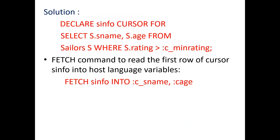The solution to example two is to make use of a cursor in order to fetch s_name and s_age from seller where s_rating is greater than c_minimum_rating. To overcome the problem of the previous example, we declare a cursor: DECLARE s_info CURSOR FOR SELECT s_name, s_age FROM seller WHERE s_rating > :c_minimum_rating.